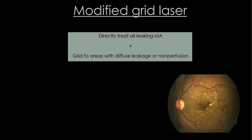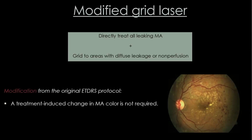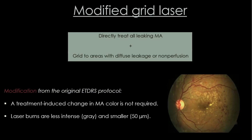Modified grid laser is a combination of focal and grid laser: direct laser to all individual leaks and grid laser to areas with diffuse leaks. Its main difference from the ETDRS protocol is that modified grid laser uses burns of lower intensity — less power and smaller spot size.